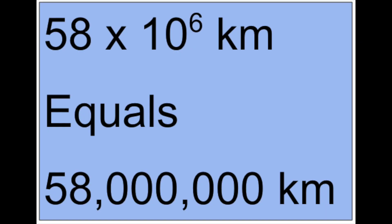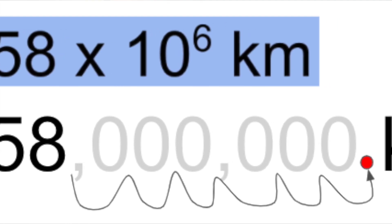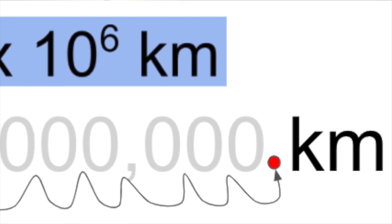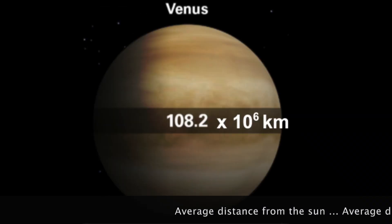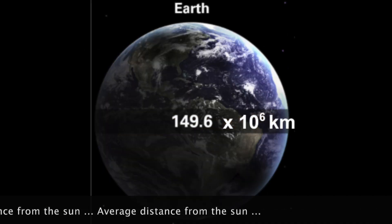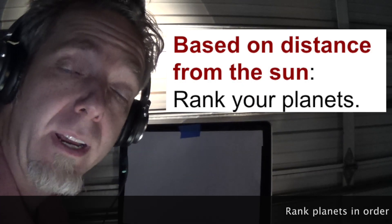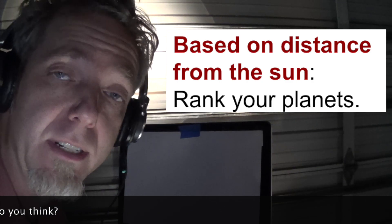58 times 10 to the 6 kilometers equals 58,000,000 kilometers. We move the decimal from the 58 right after the 8 over 6 decimal places. That is helping us write this number in a smaller way. Venus is about 108 times 10 to the 6 kilometers away. Earth is about 150 times 10 to the 6 kilometers away. Mars is about 228 times 10 to the 6 kilometers away. Based on that data, try ranking these planets in order from the coolest to the warmest based on their distance from the sun.